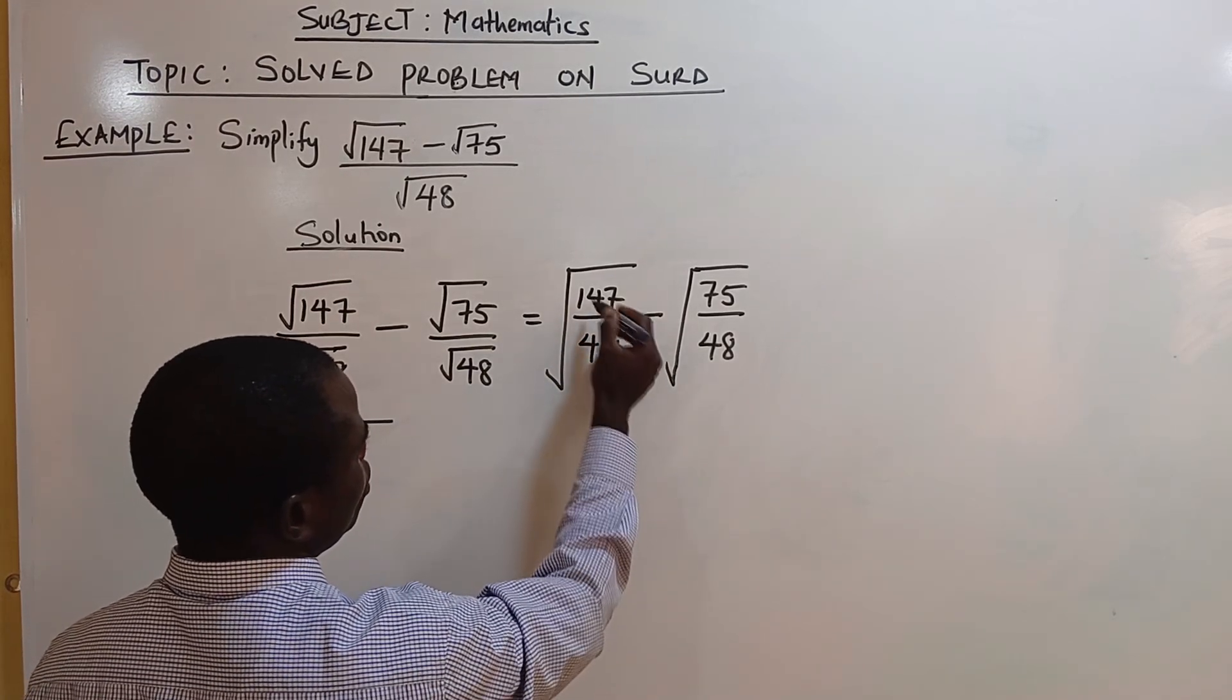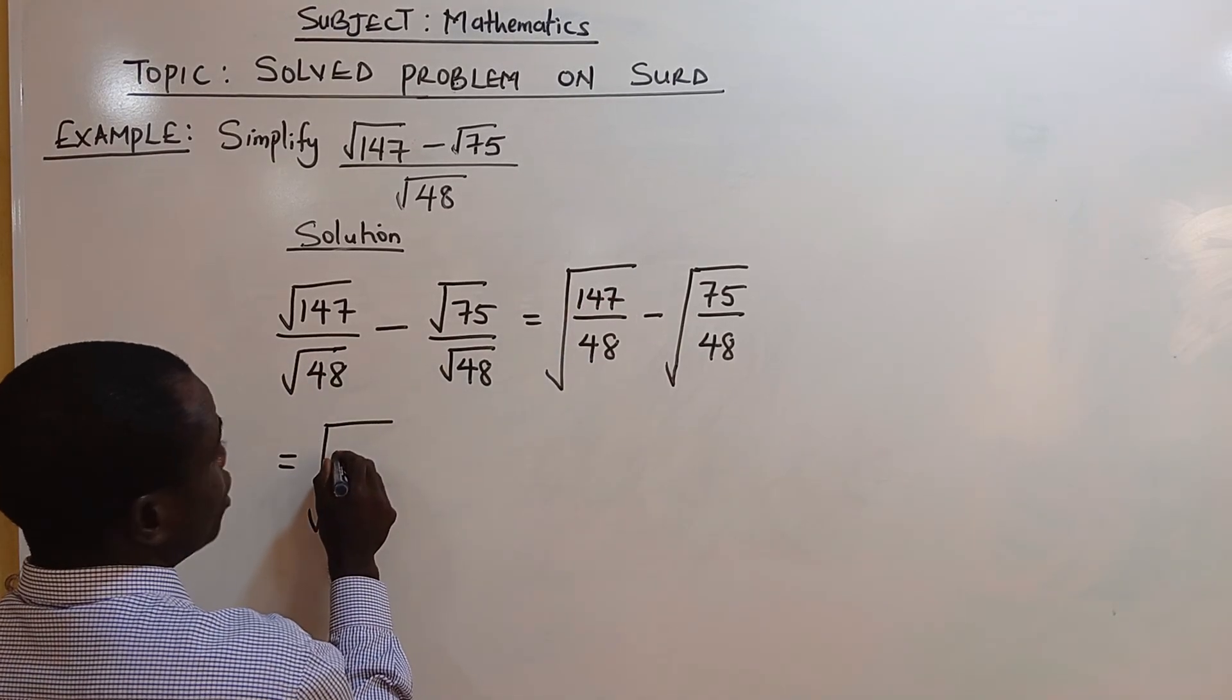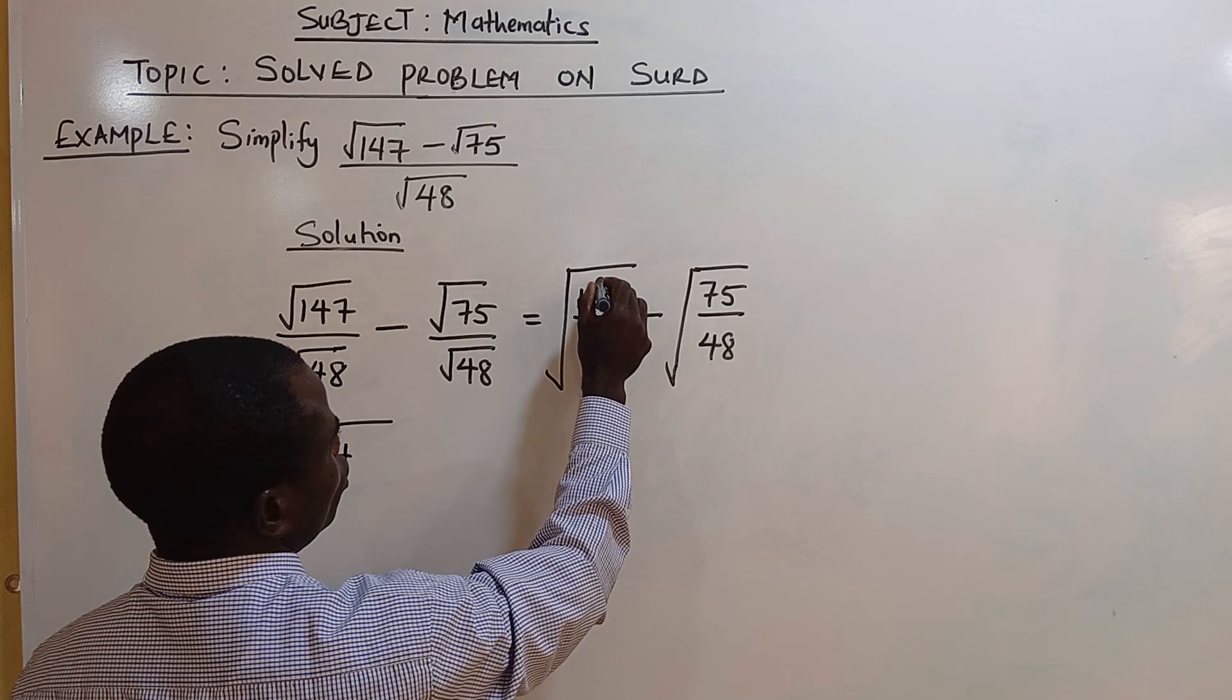What can divide the two is 3. 3 goes into 147: 3 times 4 is 12, remainder 2.